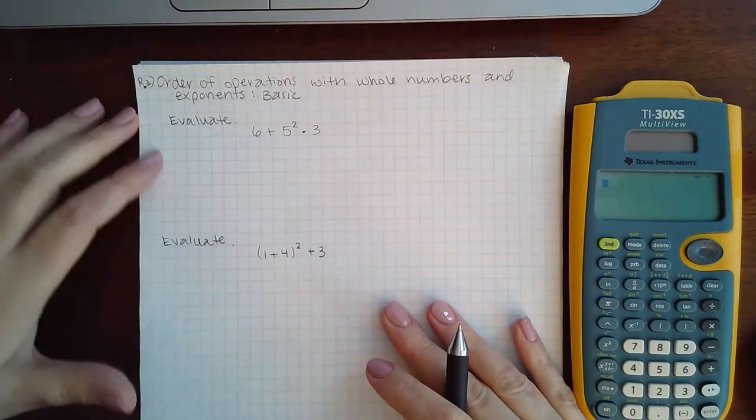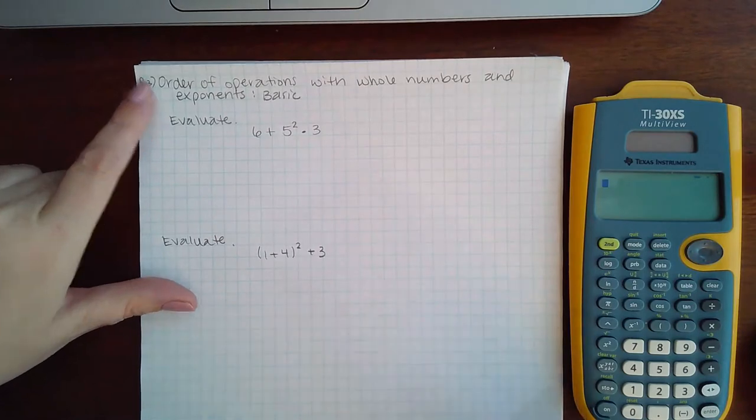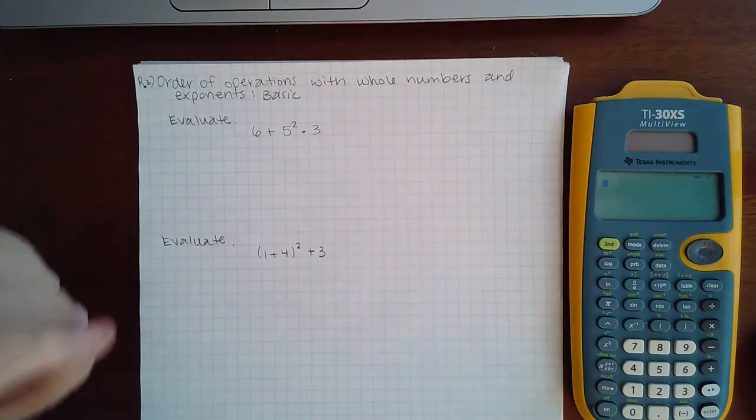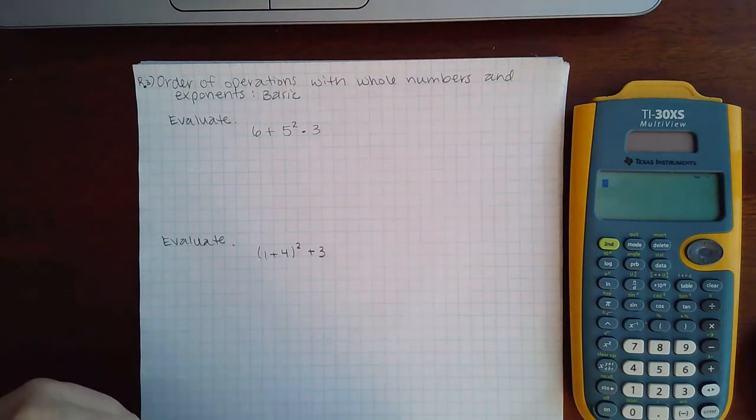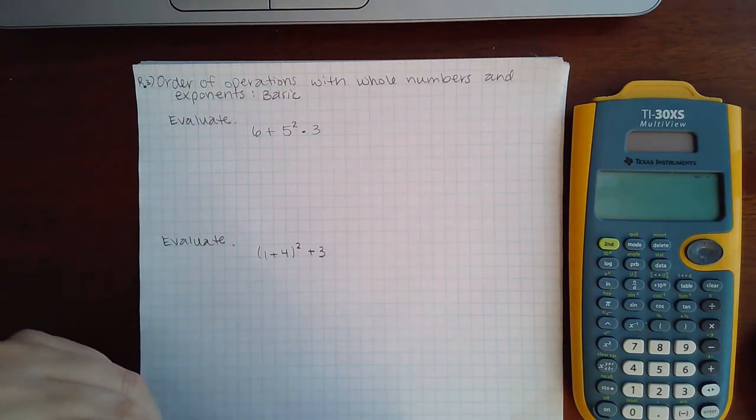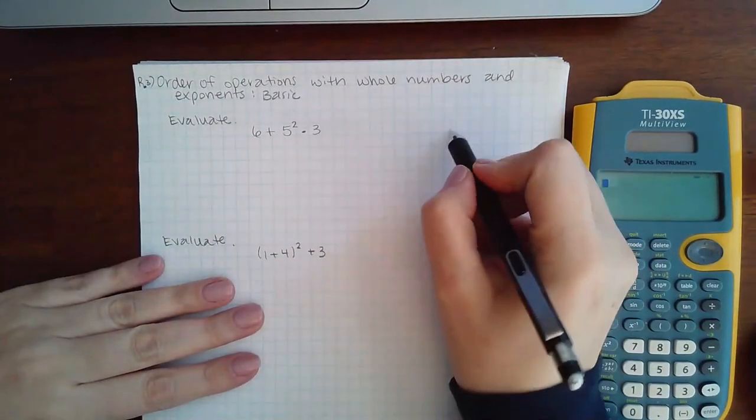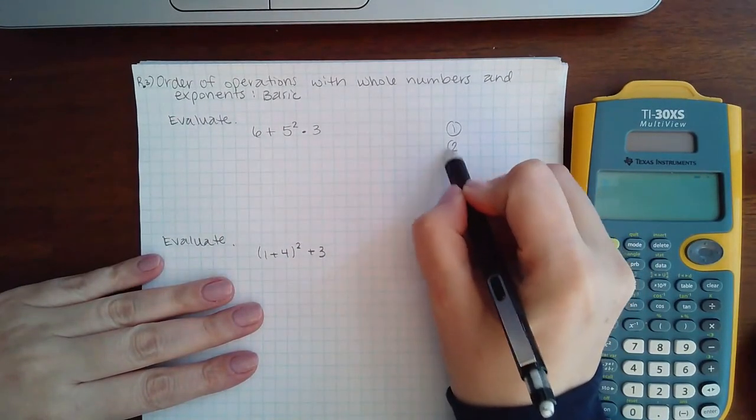Okay, this topic is again from R.3, chapter R section 3, and there's order of operations with whole numbers and exponents, the basic version. So here they want us to evaluate this. Remember the four steps to solving orders of operations.